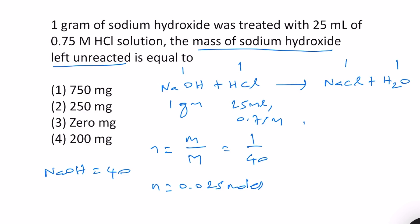For HCl, number of moles is equal to molarity times volume in liters. Molarity is 0.75 mole per liter and volume is 25 ml. If we convert that into liters that will be 0.025 liters.